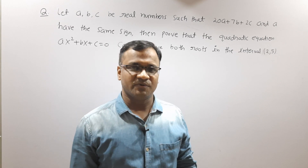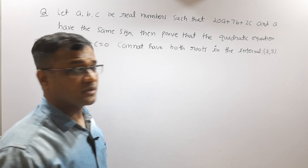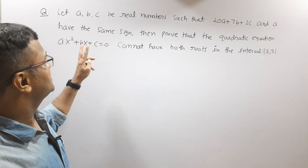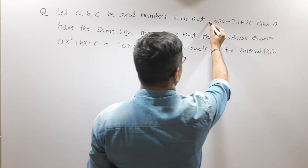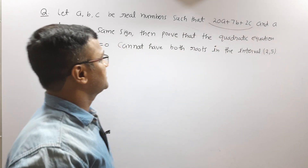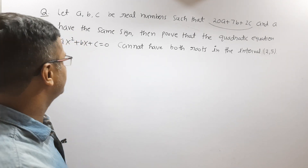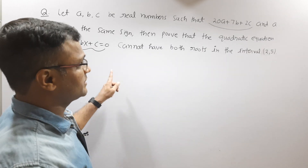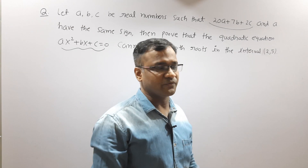Hello dear student, today I am going to discuss a beautiful algebra problem from the book Math Storm. As you can see, there are three real numbers a, b and c such that the expression 20a + 7b + 2c and a have the same sign, and you have to prove that the quadratic equation ax² + bx + c = 0 cannot have both roots lying in the open interval (2, 5).